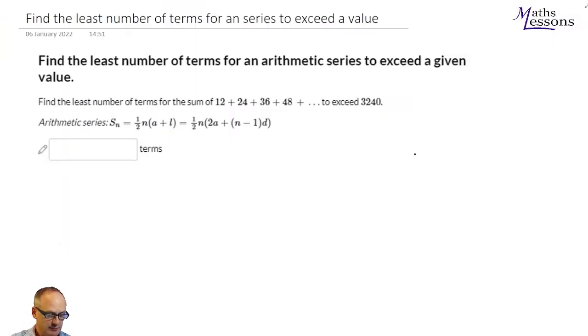We're going to look at a problem where we're going to find the least number of terms for an arithmetic series to exceed a given value. So here's our arithmetic series. It goes 12, 24, 36, 48, and we want it to exceed, when you add all these up, to exceed 3,240.